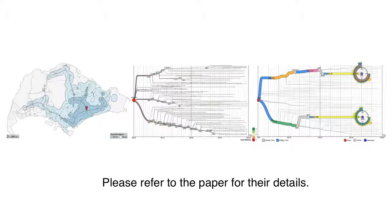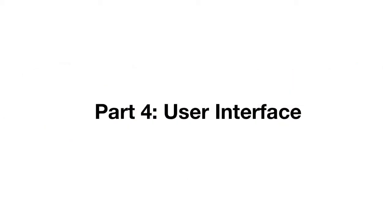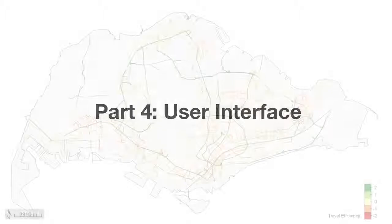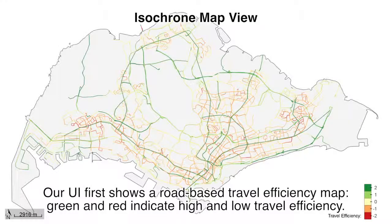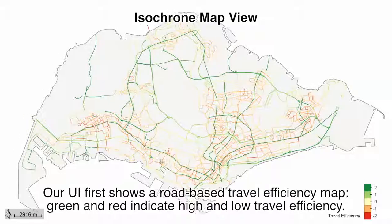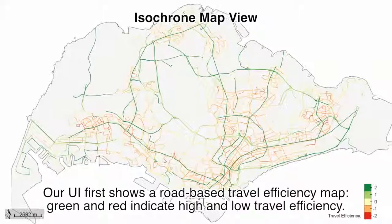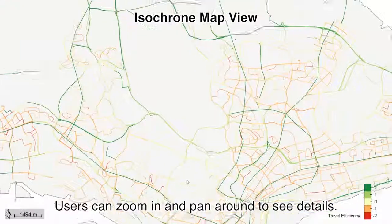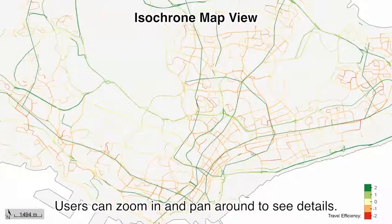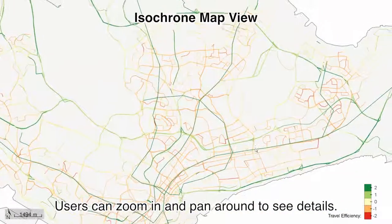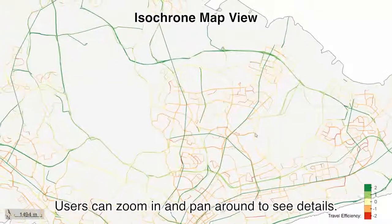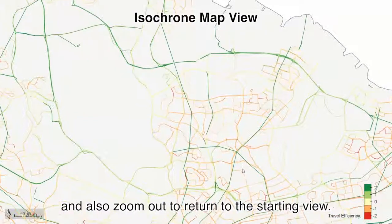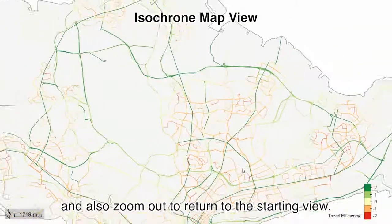Please refer to the paper for their details. Our UI first shows a road-based travel efficiency map, where green and red indicate high and low efficiency respectively. Users can zoom in and pan around to see details, and also zoom out to return to the starting view.